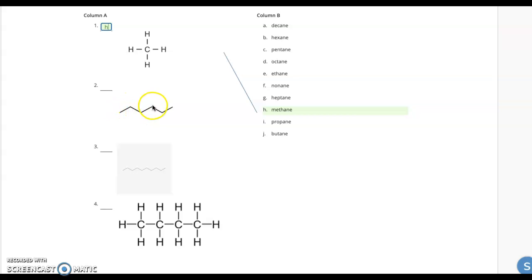Here I have one, two, three, four, five, six carbons, all single bonds. So it's hexane, letter B.